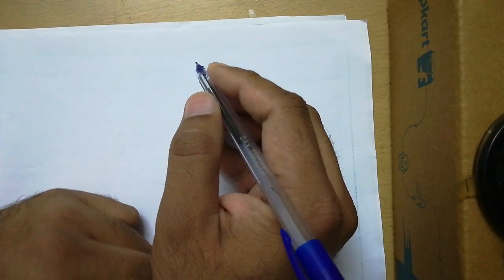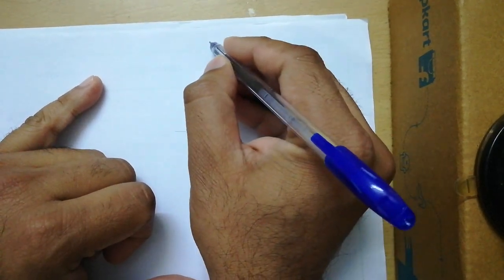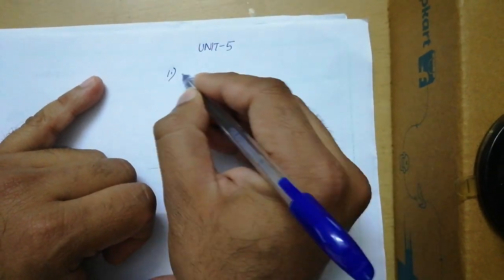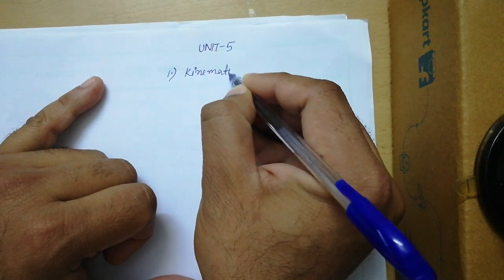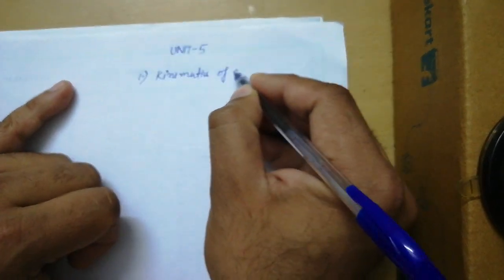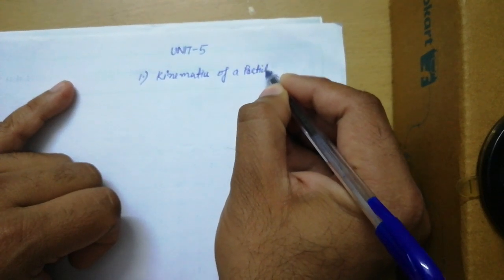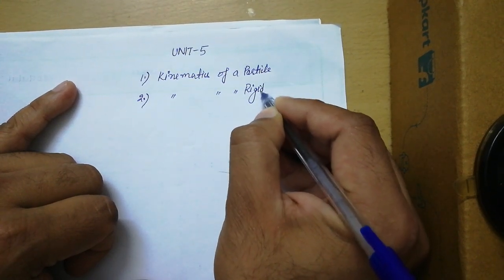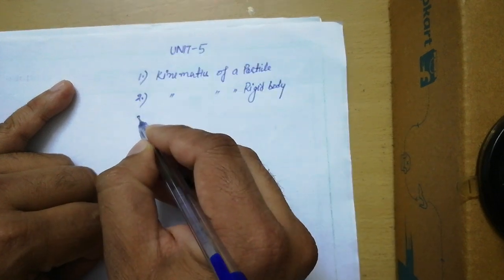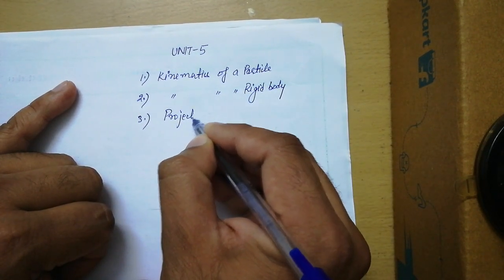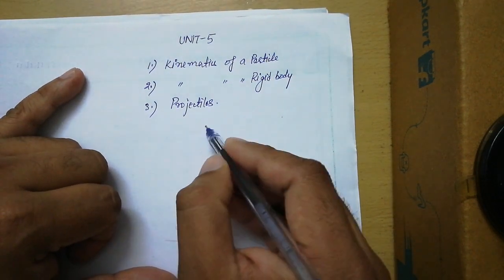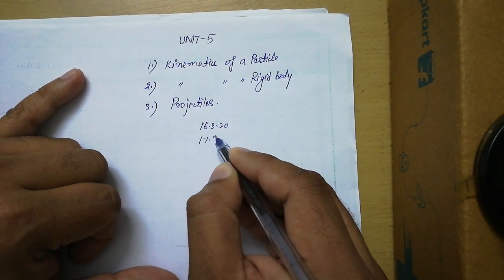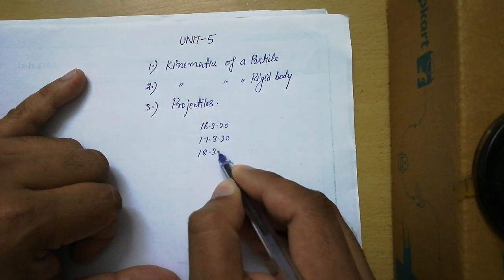Hello students. I have uploaded files on UMS regarding your unit number 5, and in that unit there are three topics which we have to cover: the first one is kinematics of a particle, the second is kinematics of a rigid body, and the third is projectiles.